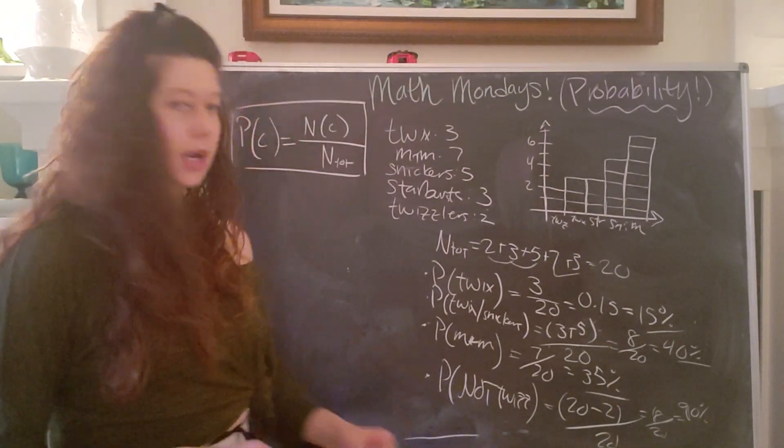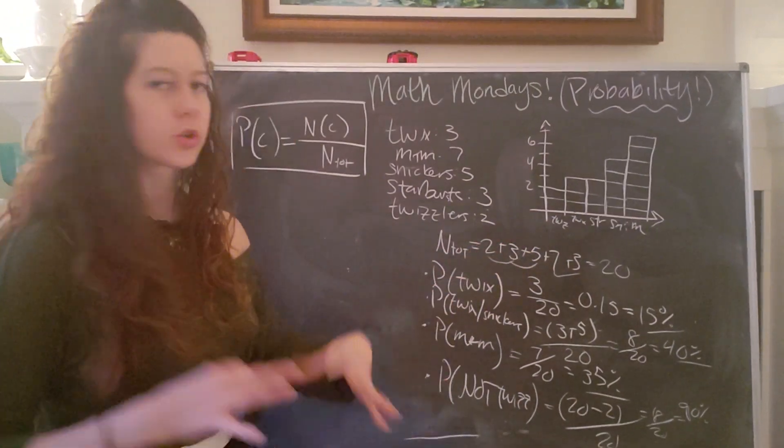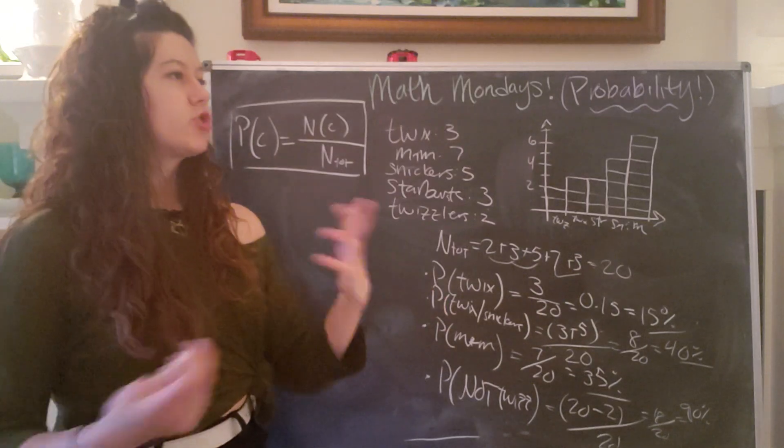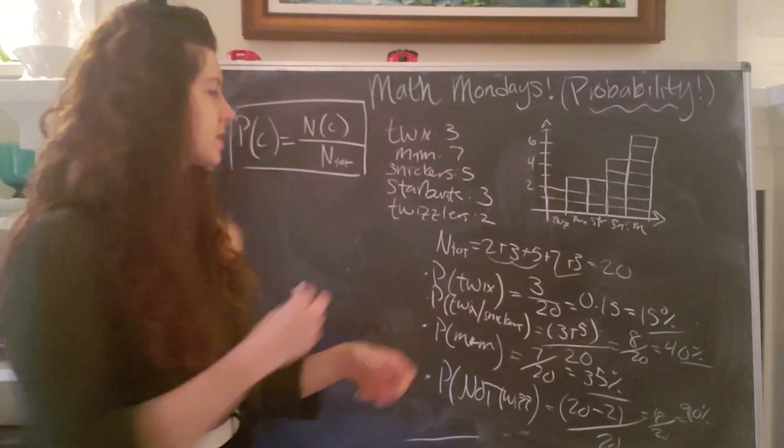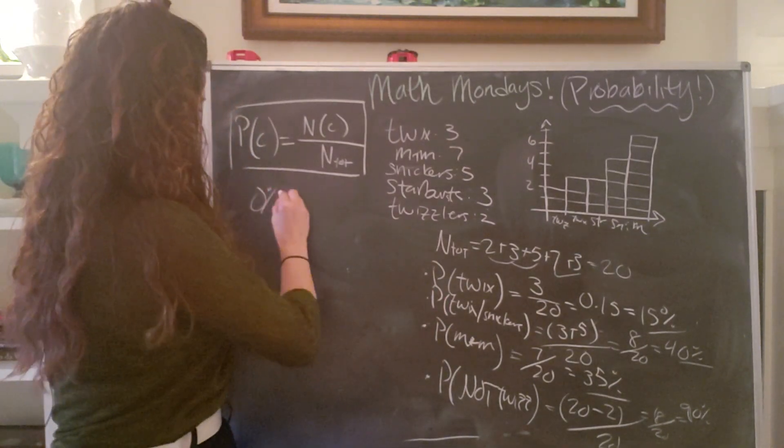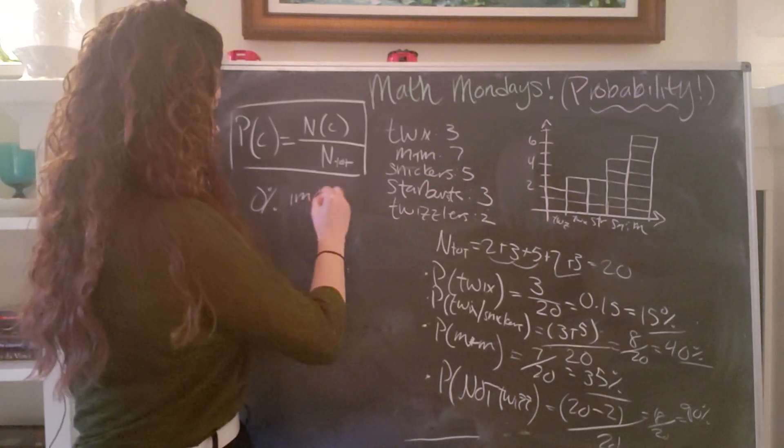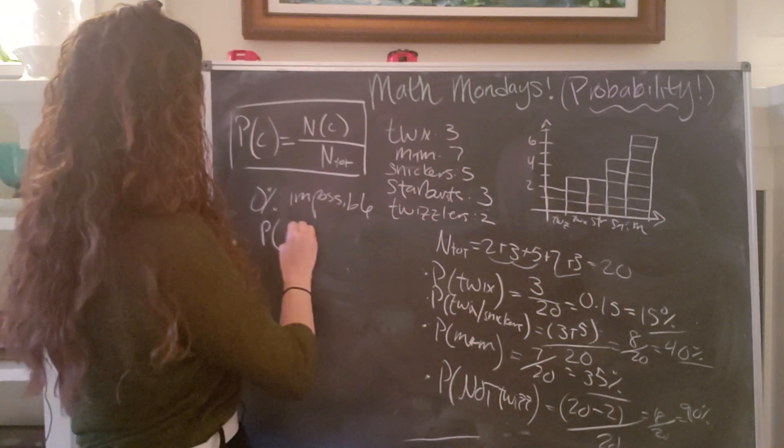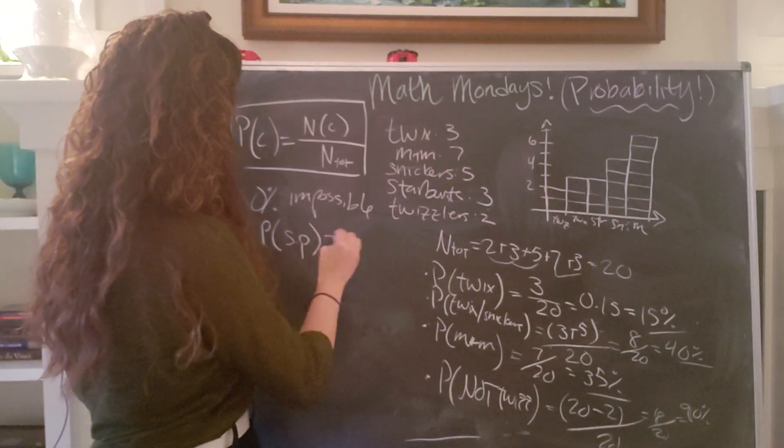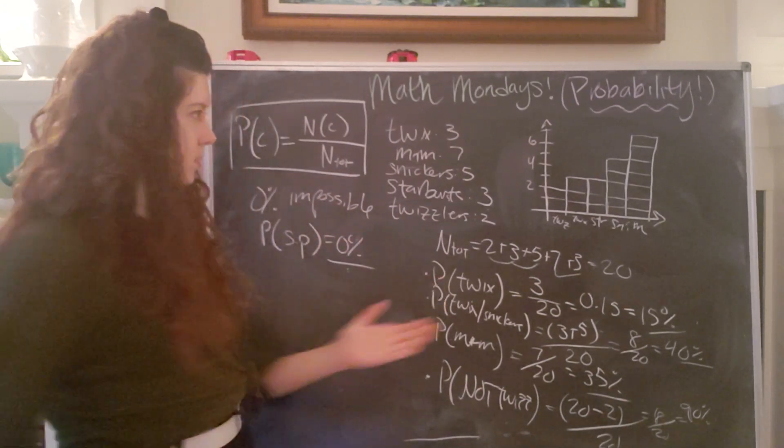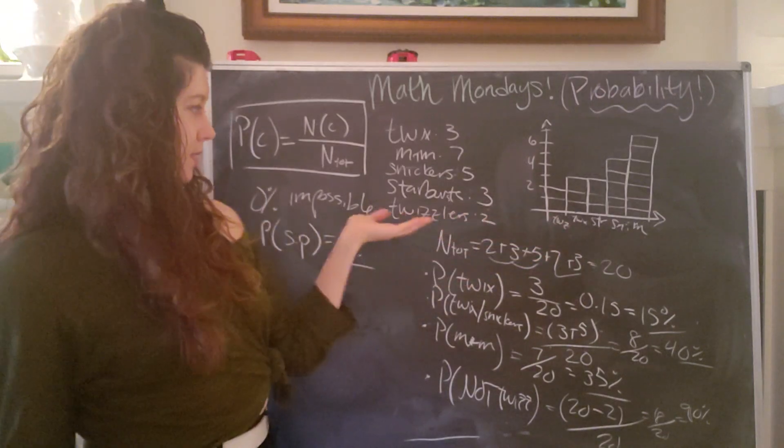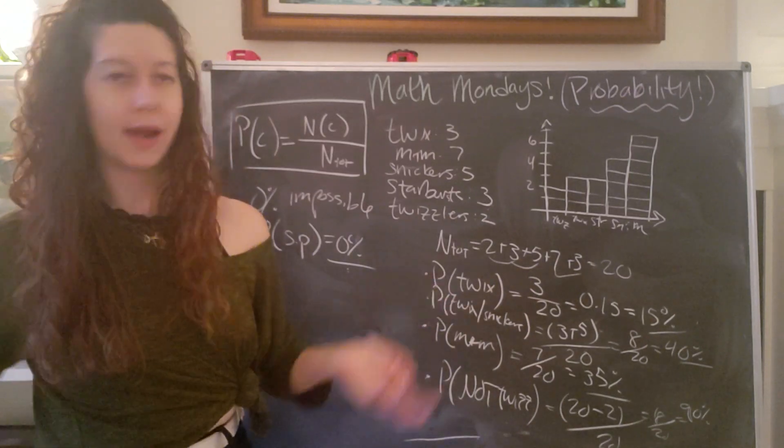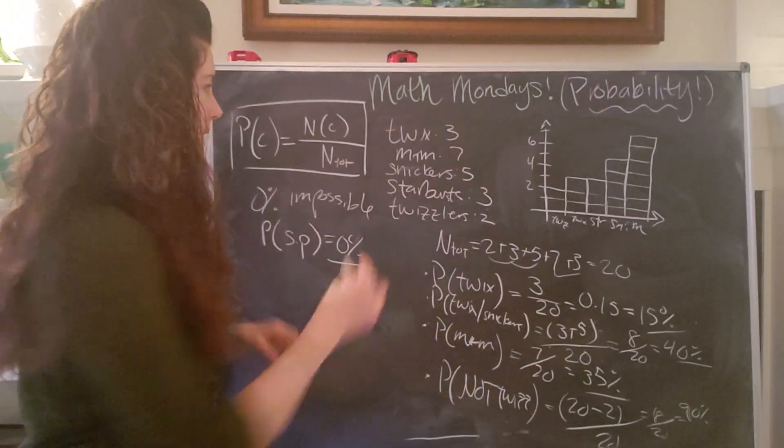And then the last thing that I want to mention is that when we're talking about probability, the reason why I like percentages is because percentages are really clear that we're talking about something between 0% or impossible. So for example, the probability that I would pull out a Sour Patch or SP for short is zero because there are no Sour Patch candies in my bag of candy, at least not anymore. Maybe I ate them all. So now it's impossible that I will get a Sour Patch from this bag of candy.